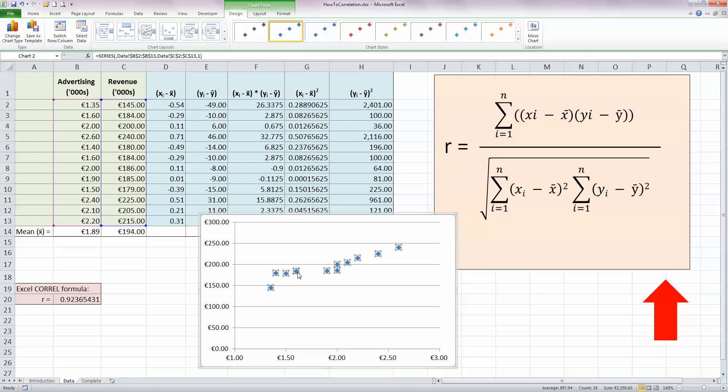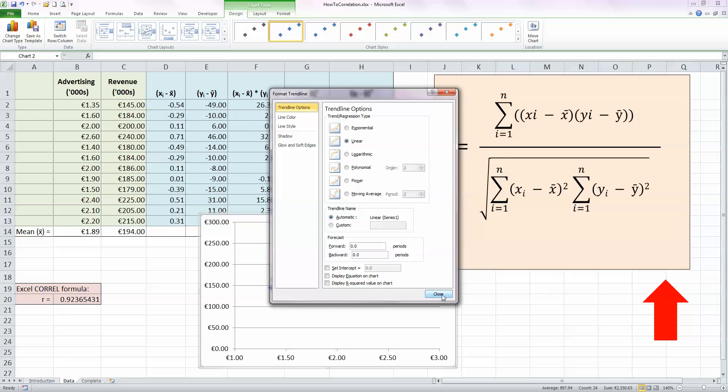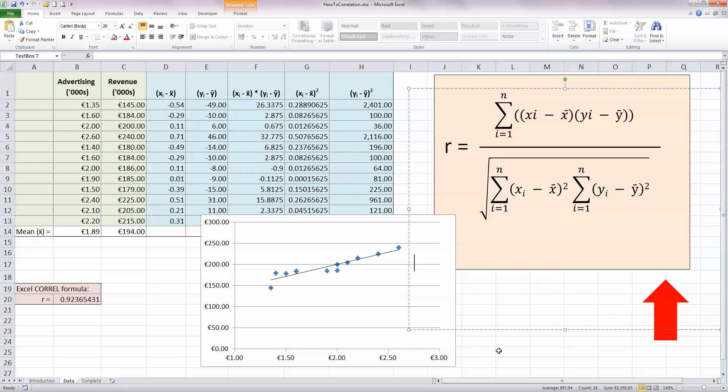And if I select a trend line in here by right clicking on the data and selecting add trend line, and I'll select linear here. So just choose close. I can see what the relationship between my advertising and my revenue is. You can see it's going from low bottom left up to high top right. So that indicates the direction of a strong positive correlation. And you can see there's not that much variation around the trend line in the center. The blue dots are following a definite trend here.